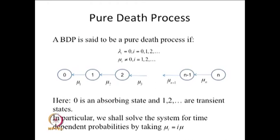A birth-death process is called a pure death process if the birth rates are 0 and the death rates are non-zero. In particular, we shall obtain the time-dependent probabilities for a pure death process in which the death rates mu_i equal i times mu. As given in the fourth example of the birth-death process, state 0 is an absorbing barrier. Therefore state 0 is an absorbing state, all other states are transient, the limiting distribution exists, and one can find time-dependent probabilities for this model.